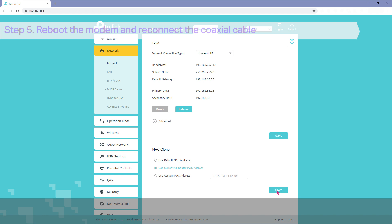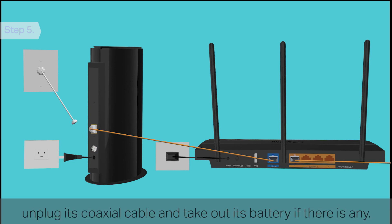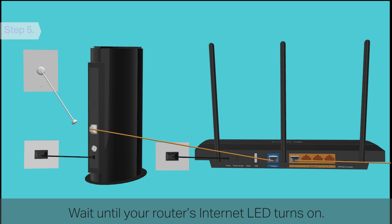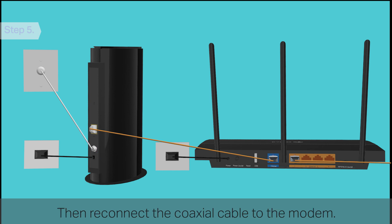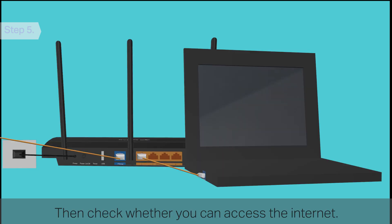Step 5: Reboot the modem and reconnect the coaxial cable. Turn off your modem. Unplug its coaxial cable and take out its battery if there is any. Wait one minute. Then turn on the modem and wait until your router's internet LED turns on. Then reconnect the coaxial cable to the modem. Wait another minute, then check whether you can access the internet.